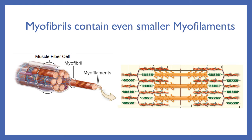Every muscle fiber cell is composed of 200 to 1,000 — even 2,000 — of these contractile rods called myofibrils. They just pack into that cell as tightly as possible. Inside of every myofibril, you're going to find the actual causes of a contraction: the myofilament.